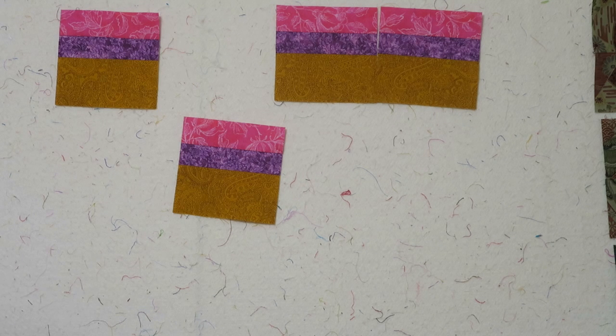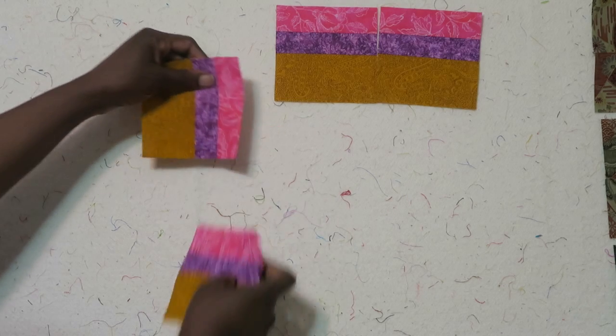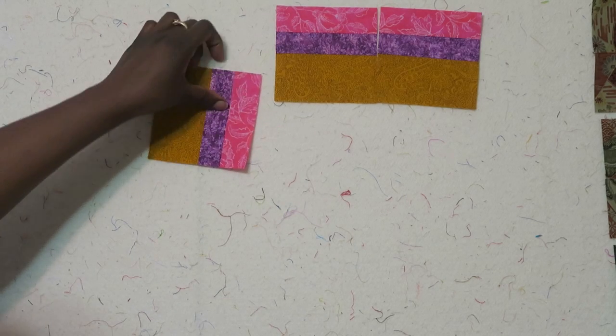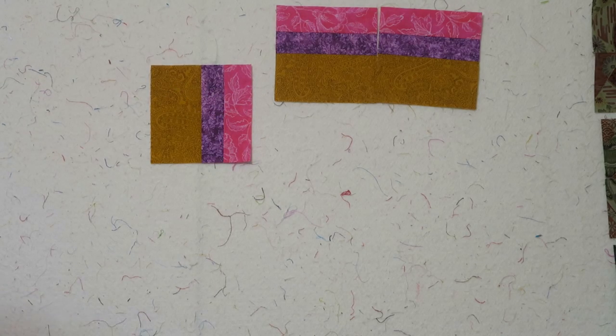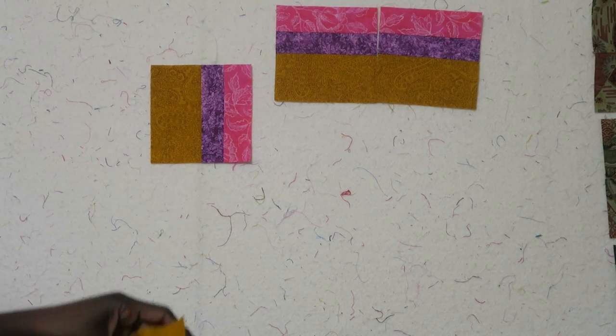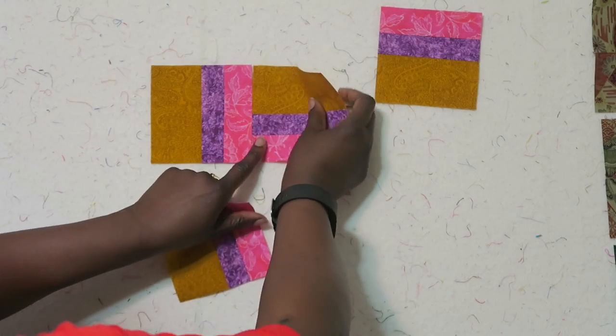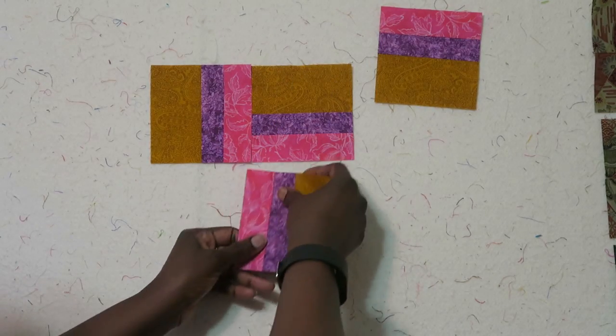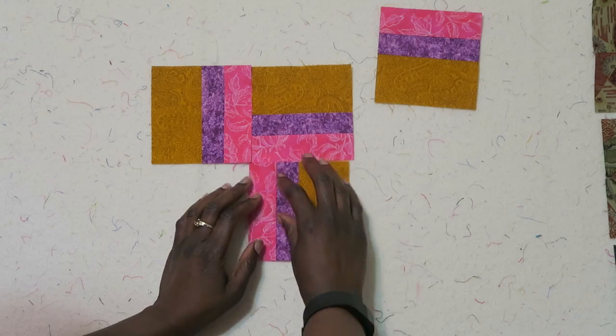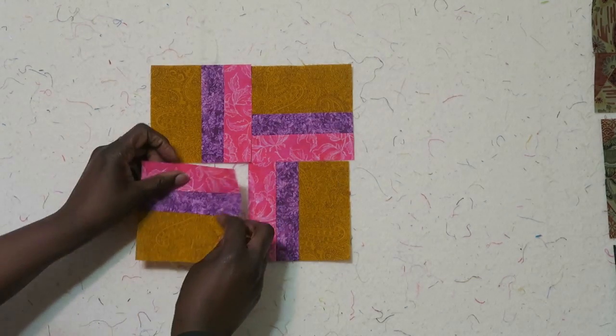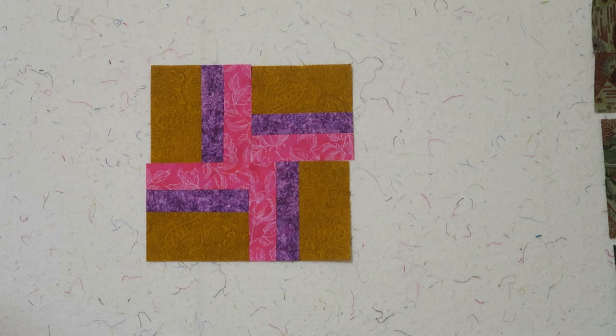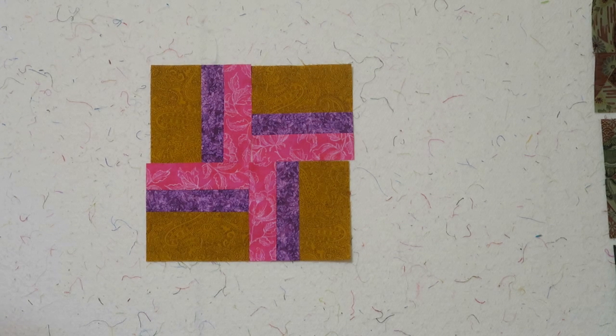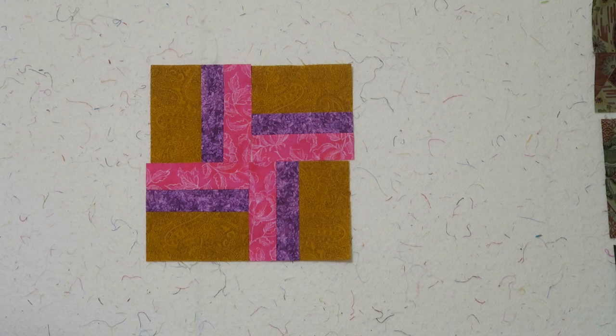So we're actually making pinwheel blocks. We're going to just take our block and we're going to rotate it one quarter turn each time so that we end up with a pink pinwheel in the center. So now we have a little four patch block. I told you this was going to be a quick scrap buster quilt block, but I think you're going to like the outcome.